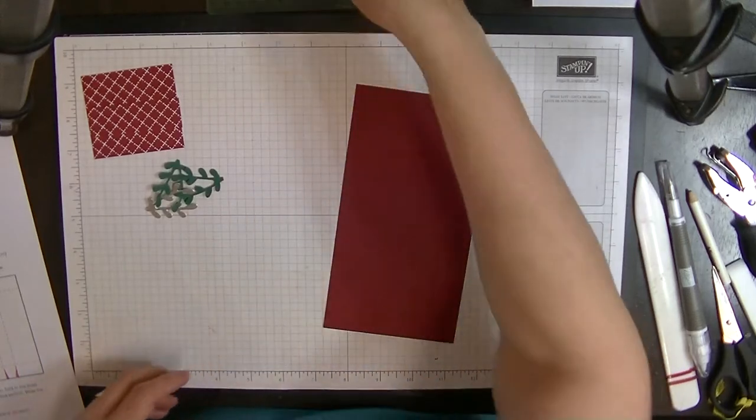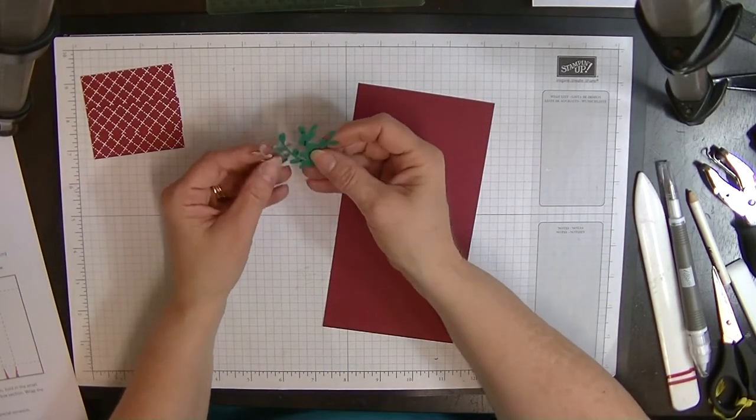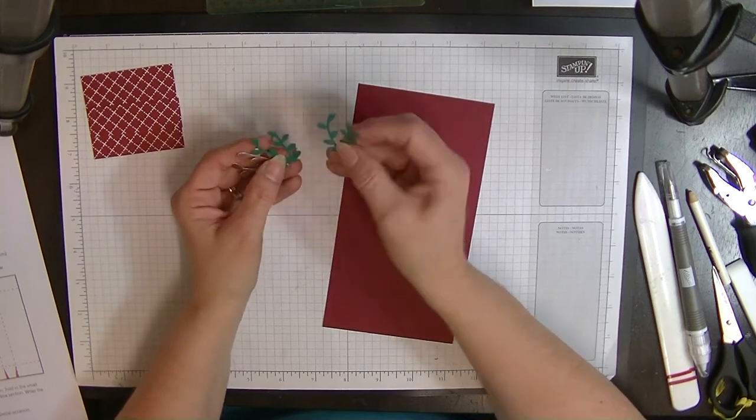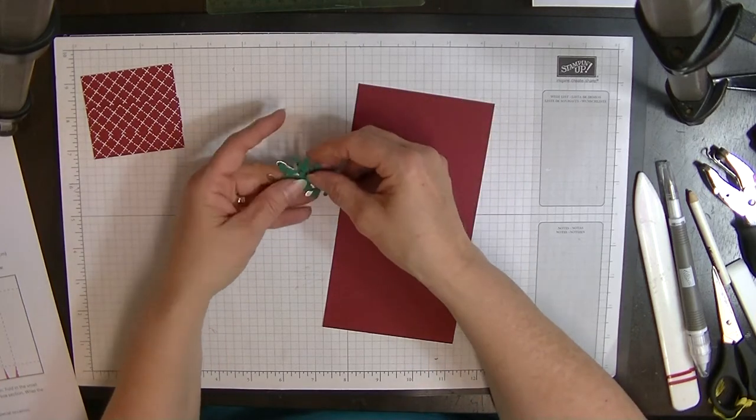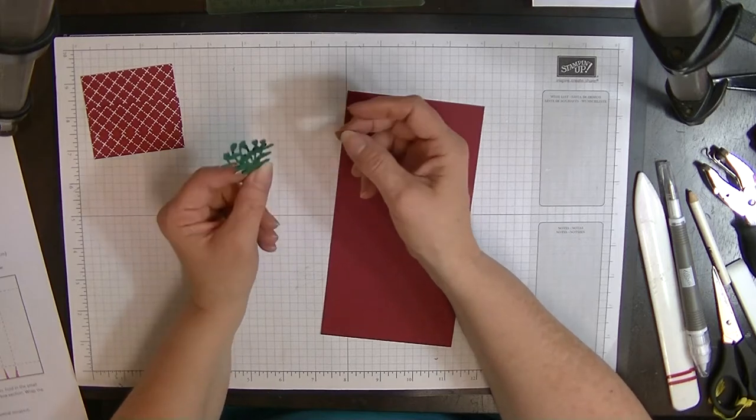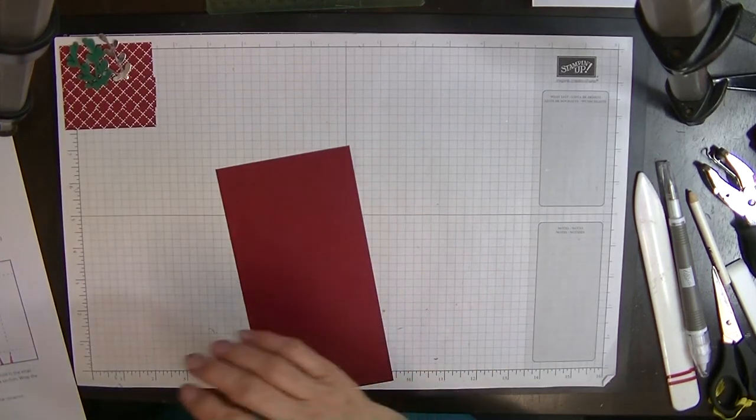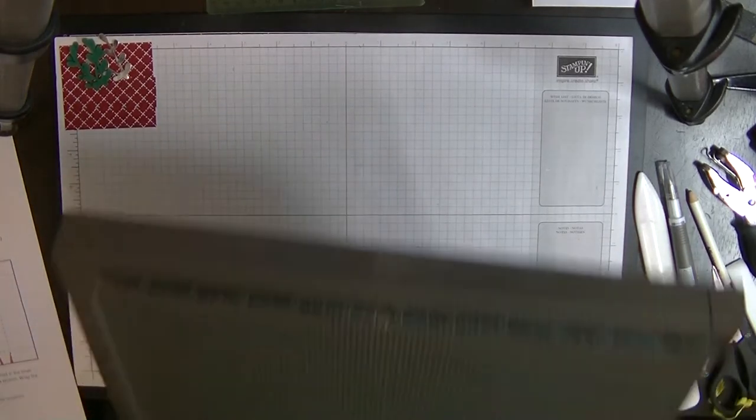So I used my sprig punch and I punched out of some scraps that I had, two green and one silver sprigs, just for helping to decorate the front of the card. So that's all we need. So let's get the scoreboard and let's score away.